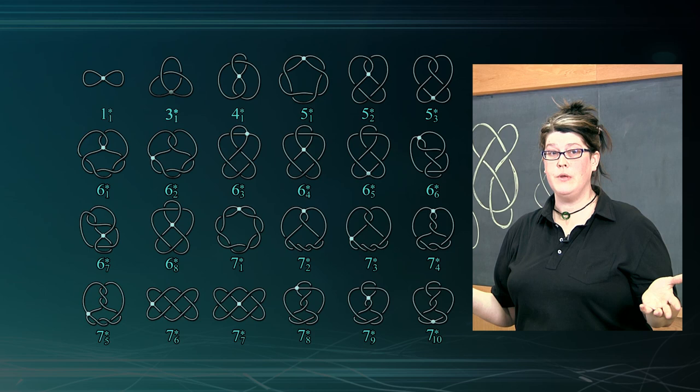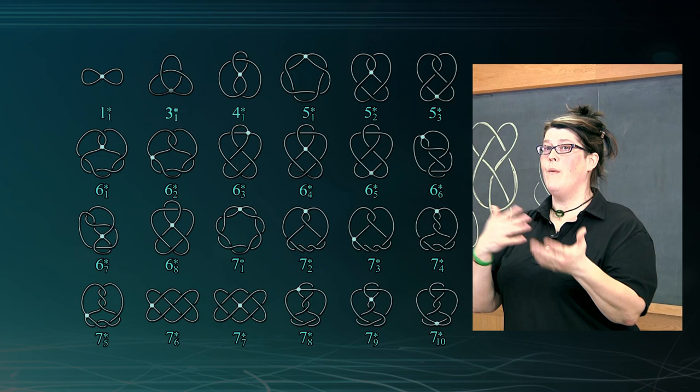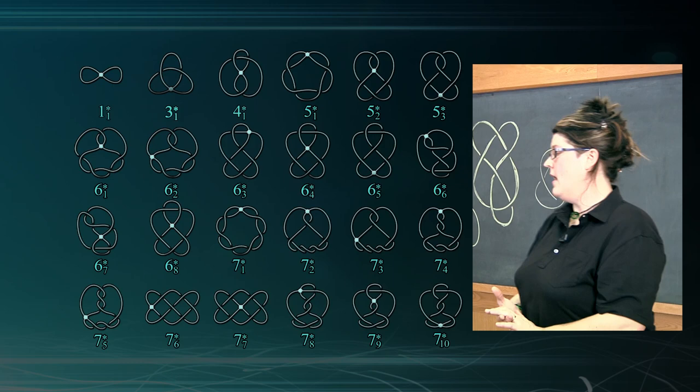Once again we can use computers to try to get huge data sets, find out what's going on, look at all possible combinations, and get a table of singular knots. We made the first table of singular knots up to, I think, eight crossings.